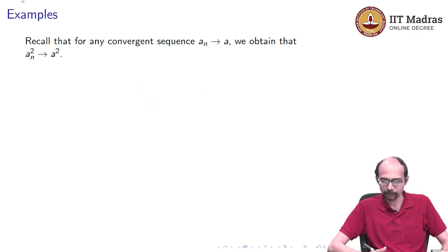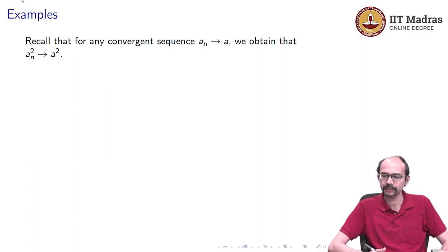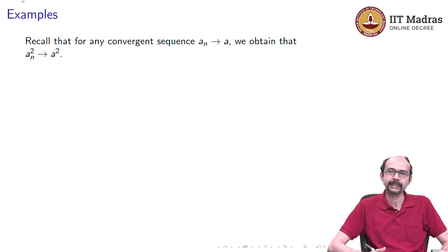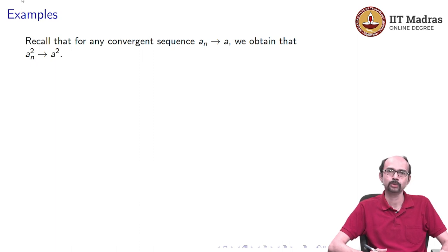Let us start with some examples. Recall that if you have a convergent sequence aₙ tending to a, we obtain that aₙ squared tends to a squared. This was one of the properties we discussed: if you have two convergent sequences, aₙ tends to a and bₙ tends to b, then aₙ times bₙ tends to a times b. In particular, aₙ squared tends to a squared, and more generally we can use this for polynomials.